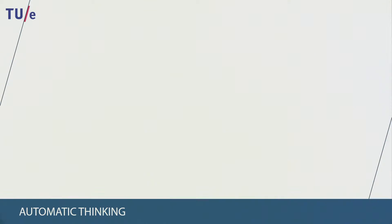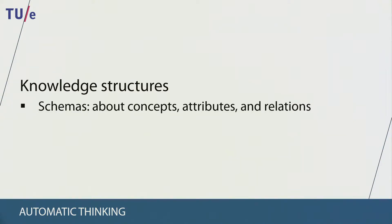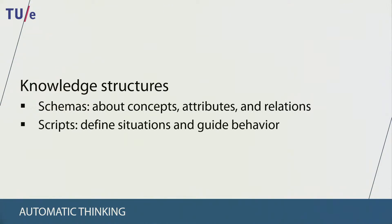Our automatic thinking relies on so-called knowledge structures, which are organized packets of information stored in our memory. There are different types of these knowledge structures. The first one is schemas, which represent substantial information about a concept, its attributes, and relations with other concepts. The second type is a script, which defines a situation and guides our behavior — it contains information about how people behave or should behave under certain circumstances.